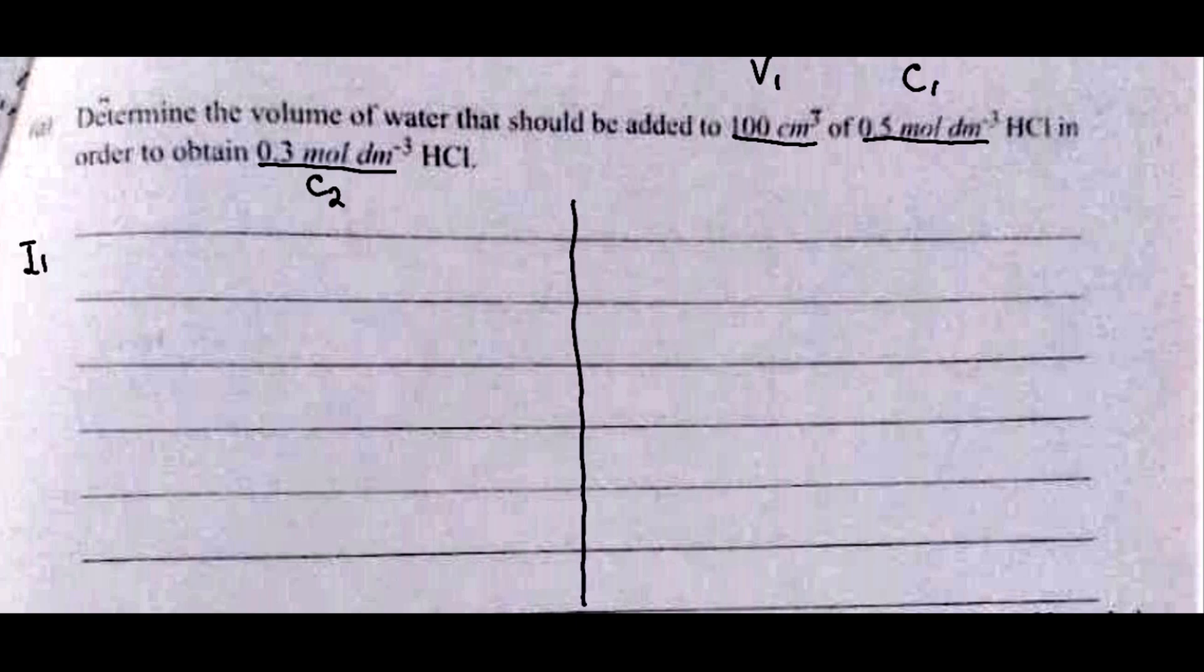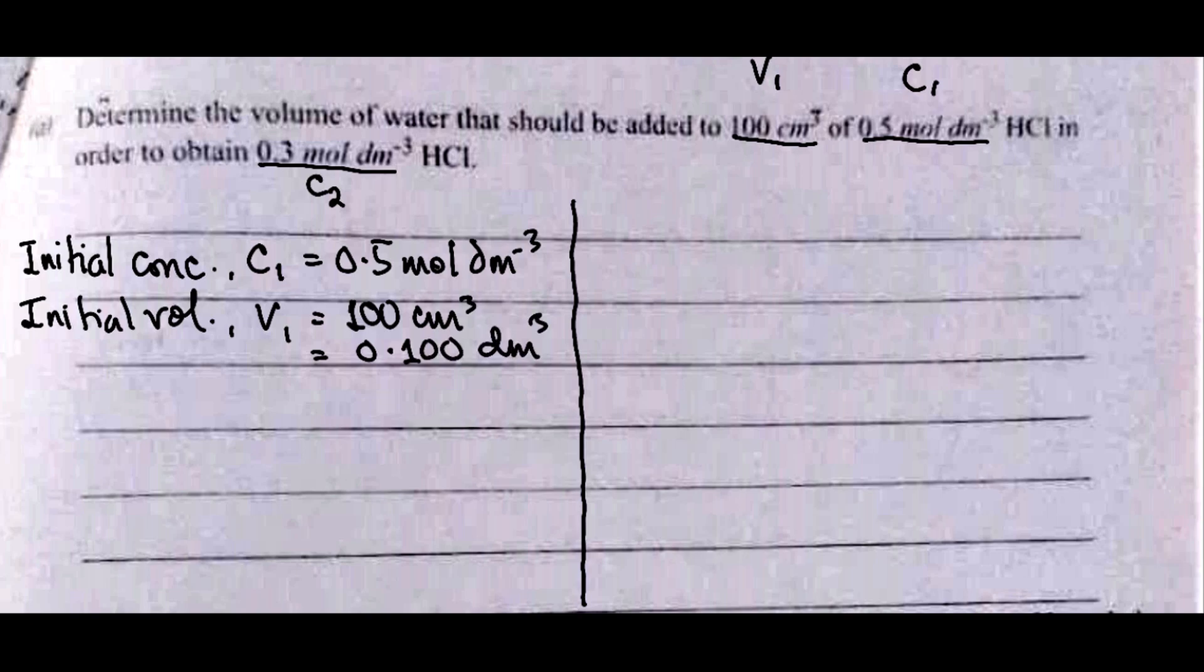Initial concentration C1 is 0.5 mol per dm³. Initial volume V1 is 100 cm³, which is 0.100 dm³. Our final concentration C2 is 0.3 mol per dm³.